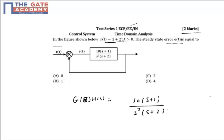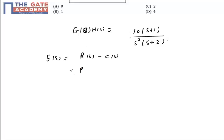Let's consider the error signal E(s), which will be the difference of input R(s) minus output C(s). The output of a feedback system, C(s), will be G(s)R(s) upon 1 plus G(s)H(s).